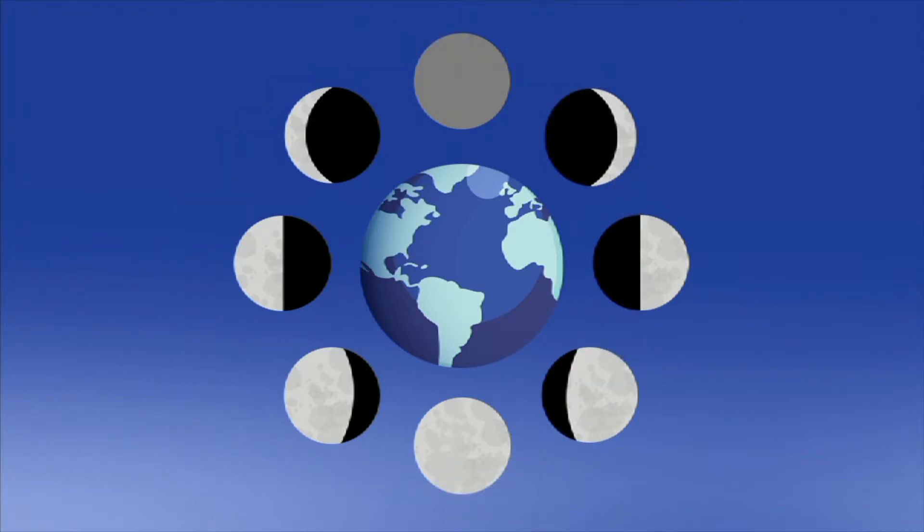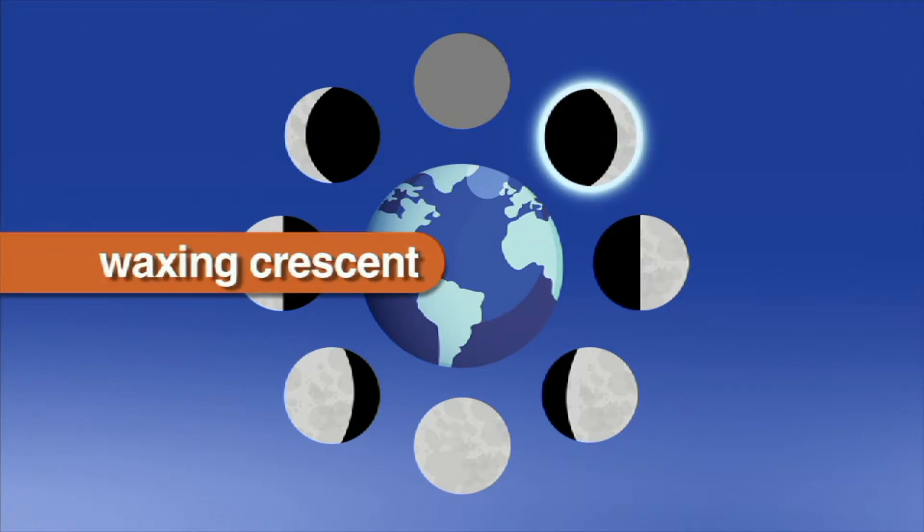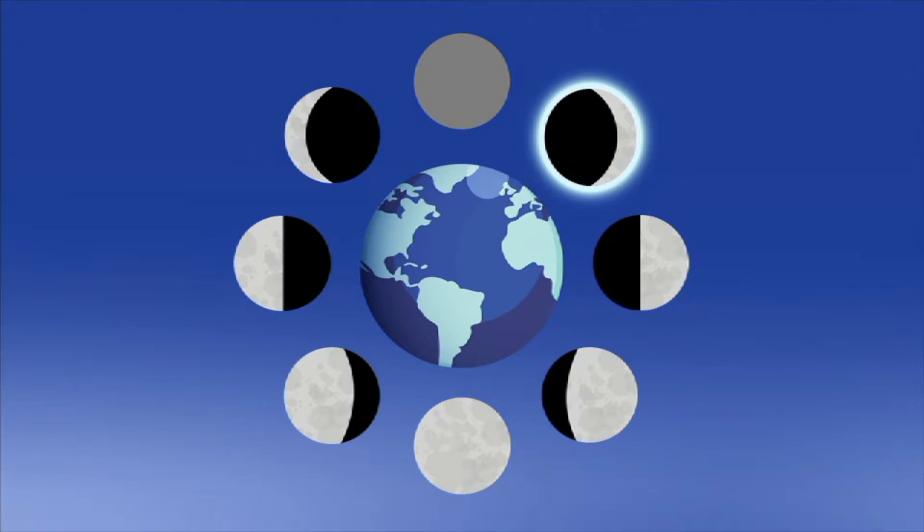The next phase of the moon on its orbit is called waxing crescent. We begin to see just a sliver of the moon, and it is growing larger, or waxing, as the moon continues on its journey around the Earth.